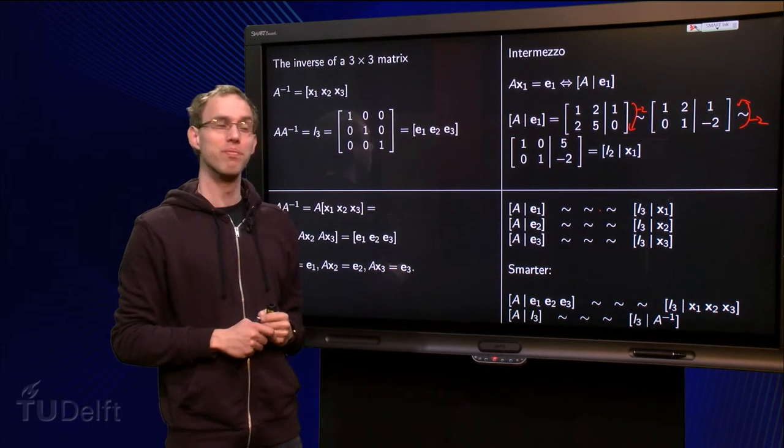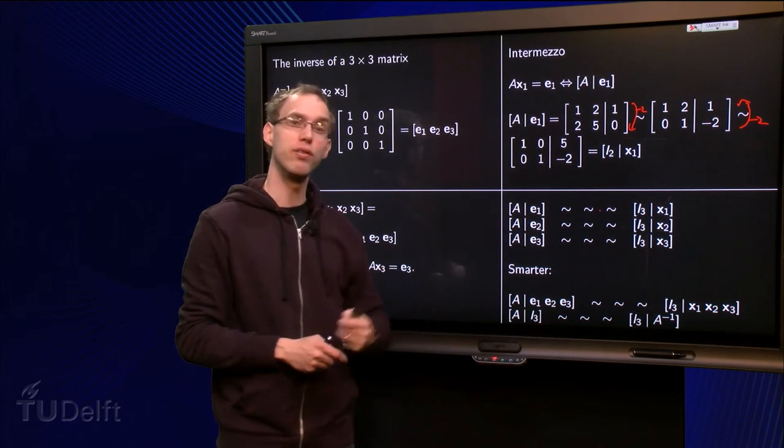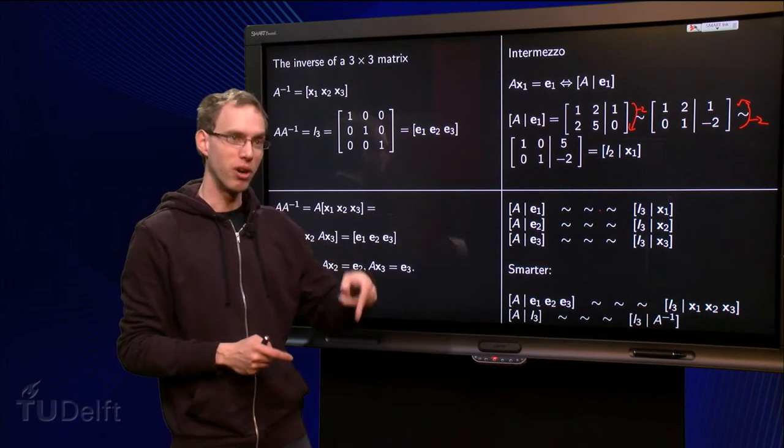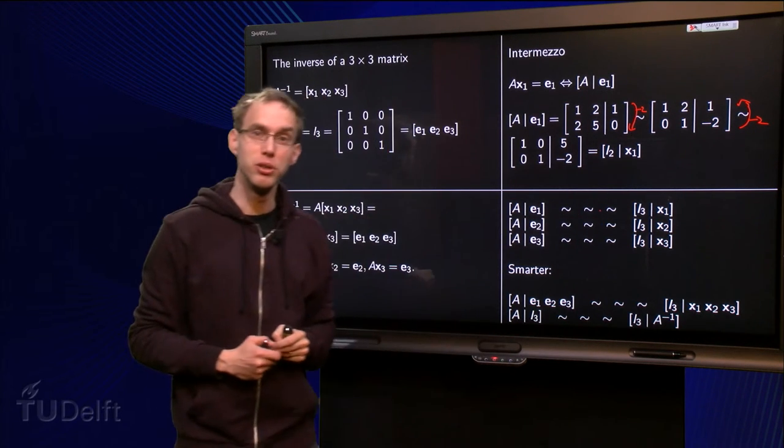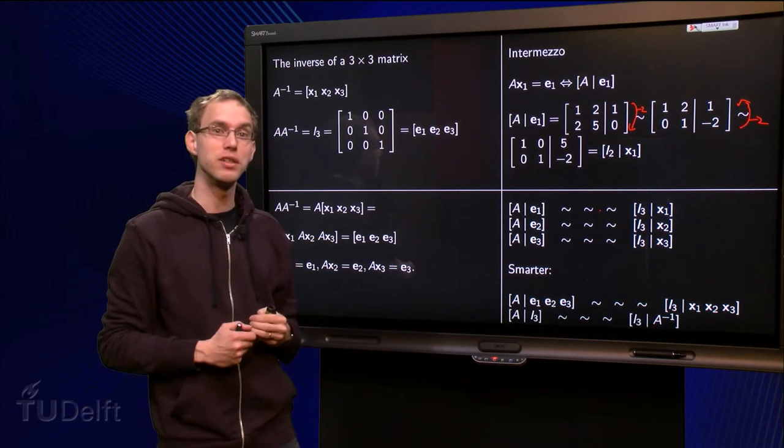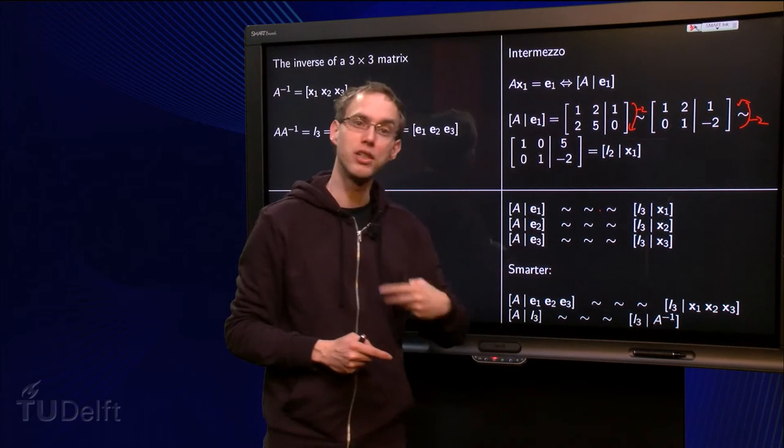Then we do the same, but now A augmented with e2. Row reduction, row reduction, row reduction, until you have reduced your A to the identity matrix, and you have gotten your solution x2 after the bar.